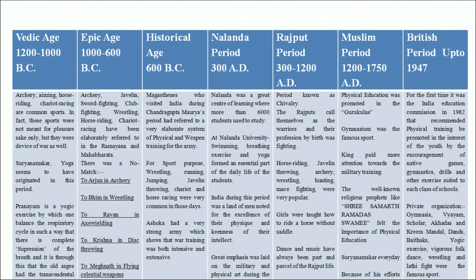The Muslim period: many traditional activities like yoga and pranayama were given a setback during this period. Hunting was a very popular sport. Sports like wrestling, boxing, swimming, sword fighting, and javelin throwing were given emphasis. Pigeon flying and animal fighting were also very popular as both sport and recreational activities.